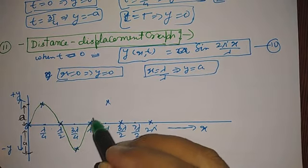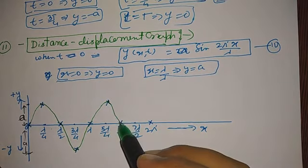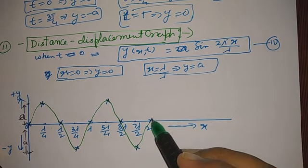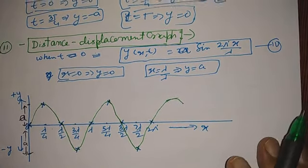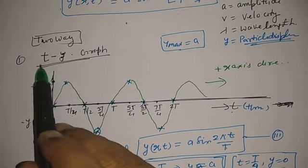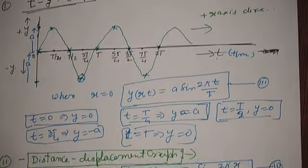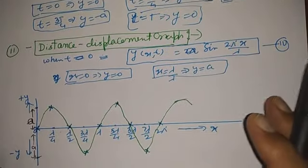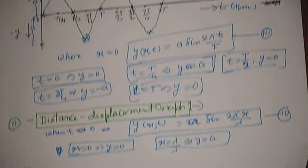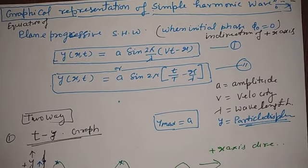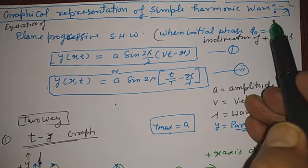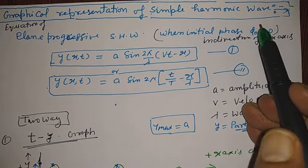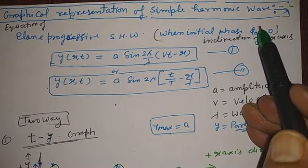The equation of plane progressive simple harmonic wave again comes in the same shape. So either we see a distance-displacement graph or a time-displacement graph, the graphical representation of both is the same. This is about plane progressive simple harmonic wave graphical representation. This is all for today. Thank you and have a nice day.